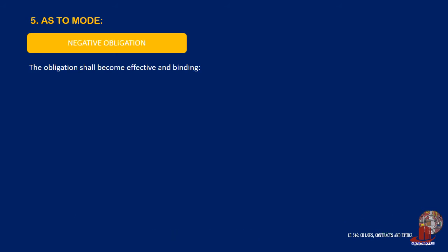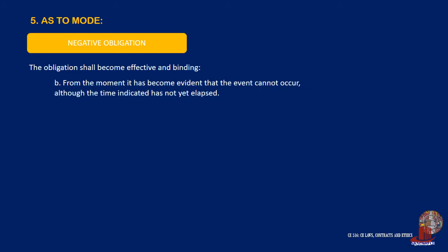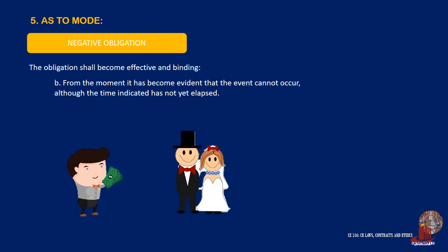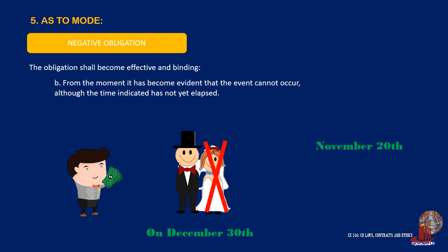The second case is from the moment it has become evident that the event cannot occur, although the time indicated has not yet elapsed. Taking the same example, suppose Charisse dies on November 20th without having been married to Bert. The obligation is rendered effective because it is certain that the condition not to marry Charisse will be fulfilled. In this case, the obligation becomes effective from the moment of Charisse's death on November 20th, although the time indicated — December 30th — has not yet elapsed.